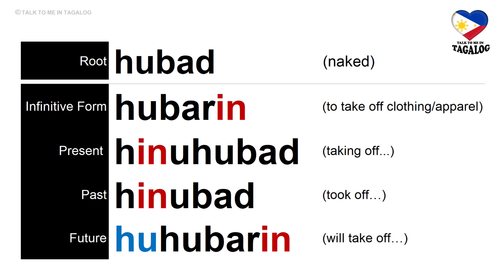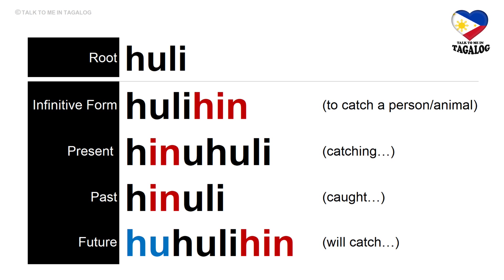Root word: huli. Infinitive form: hulihin — meaning to catch a person or an animal. Present tense: hinuhuli — catching. Past tense: hinuli — caught. Future tense: huhuliin — will catch a person or an animal.